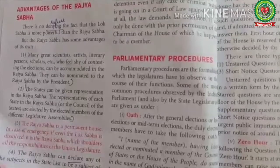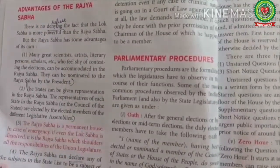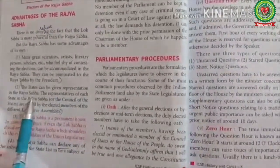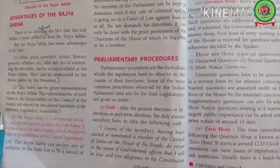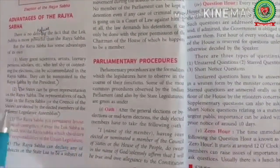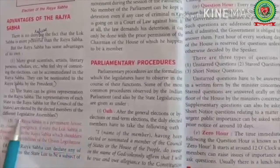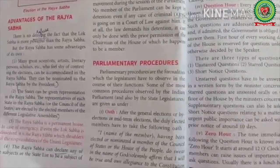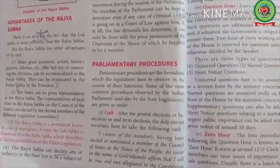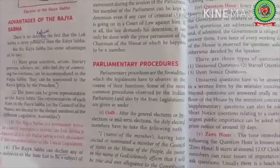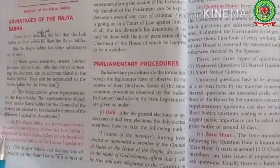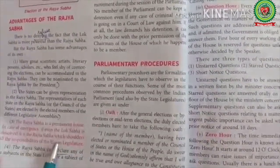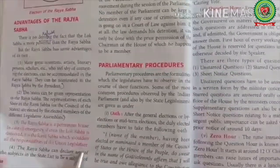The Rajya Sabha gives representation to independent, talented persons. The states can also be given representation in the Rajya Sabha — the representatives of each state are elected by the elected members of the different legislative assemblies. The Rajya Sabha represents states at the central level. It is a permanent house, and in case of emergency, if the Lok Sabha is dissolved, it is the Rajya Sabha which shoulders all the responsibilities of the union legislature.